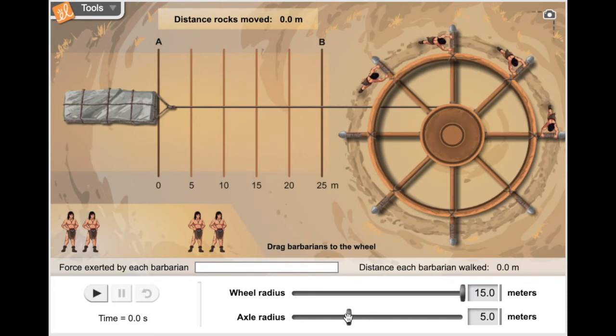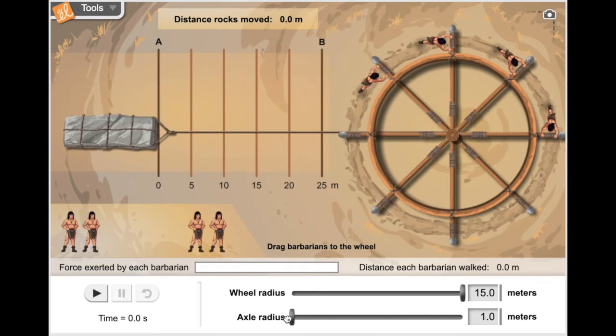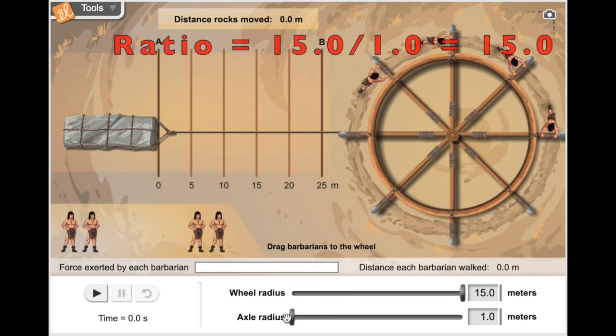Let's lower the axle radius down to 1 meter. Now the wheel-to-axle ratio is 15.